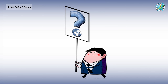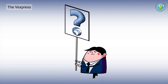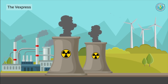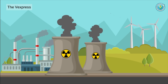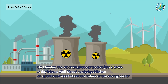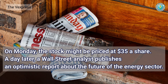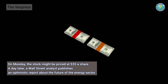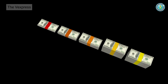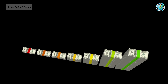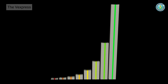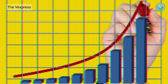In order to make the main agenda of our video more clear, let's give an example. Investors are clamoring to buy shares of ABCD Inc., a hypothetical energy company. On Monday, the stock might be priced at $35 a share. A day later, a Wall Street analyst publishes an optimistic report about the future of the energy sector. This positive outlook triggers more demand for ABCD stock, pushing the price up to $40 a share — so in just one day, the stock price has risen 14%.